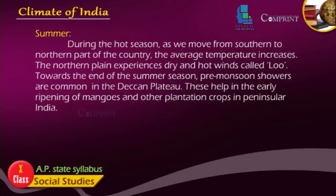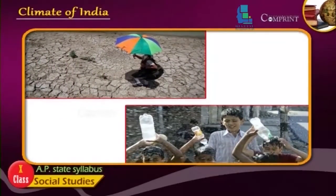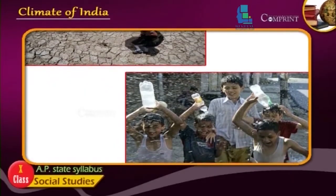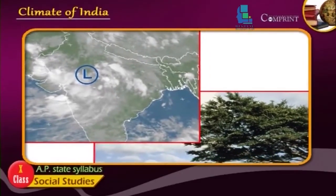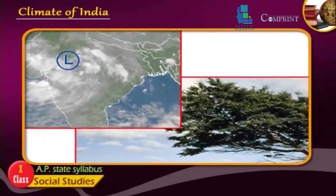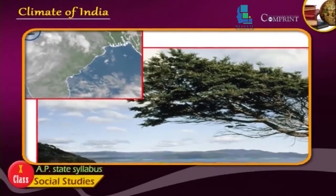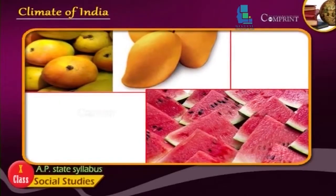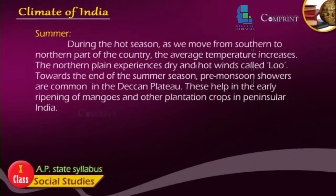As we move from the southern to the northern part of the country, the average temperature increases. The northern plains experience dry and hot winds called loo. Towards the end of the summer season, pre-monsoon showers are common in the Deccan plateau. These help in the early ripening of mangoes and other plantation crops in Peninsular India.